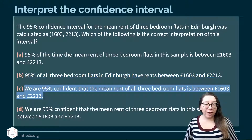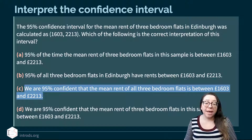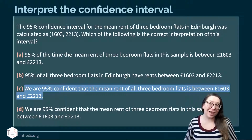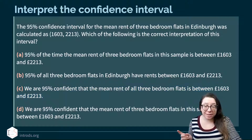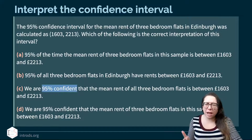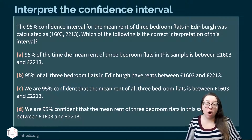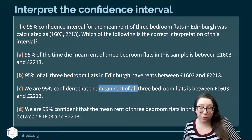Option C says 'We're 95% confident that the mean rent of all three bedroom flats is between 1,603 and 2,213.' Bingo — that is the correct interpretation. It tells us something about our confidence level and it is about the mean rent of all three bedroom flats, which is what we're building an interval for.